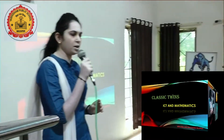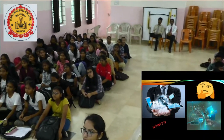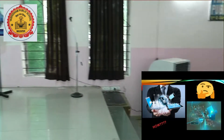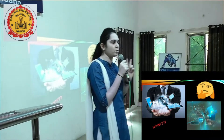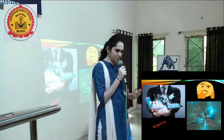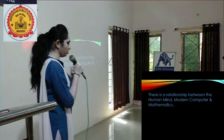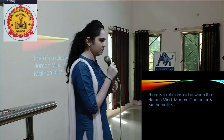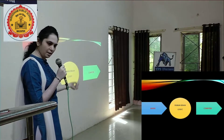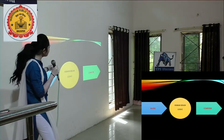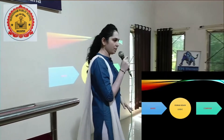Logic develops in our brain. The question is: how are these two subjects related to each other — ICT and maths? There are so many examples. The first example: there is a relationship between the human mind, the modern computer, and mathematics. Using the logic our brain develops, we can solve mathematics problems as well as do computer programming, application designing — everything depends on logic only.